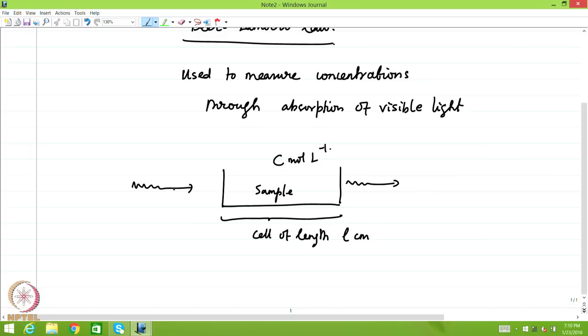And if light with a certain initial intensity I naught, visible light, falls on the sample and light with the intensity I f is emitted, obviously I f is less than I naught. That means the sample has absorbed some light.